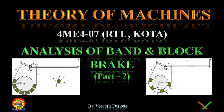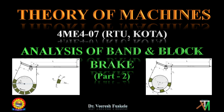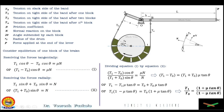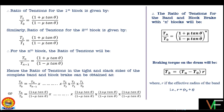Hello students, welcome to today's lecture on Theory of Machines. This is Part 2 of the lecture on band and block brake. In Part 1, we discussed the construction and working of the band and block brake, and understood why the tensions are taken as T0 and Tn on the slack side and tight side respectively. We also saw how tensions act between two blocks in a band and block brake with n blocks, and derived equations for the ratio of tensions Tn/T0 and the breaking torque.